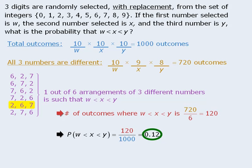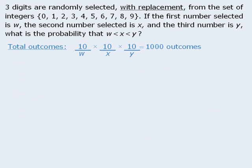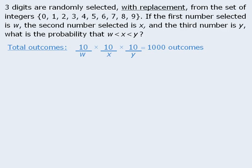Now that was the first solution. Here's another way to tackle this question. Let's determine the total number of ways in which three numbers can be selected in ascending order.